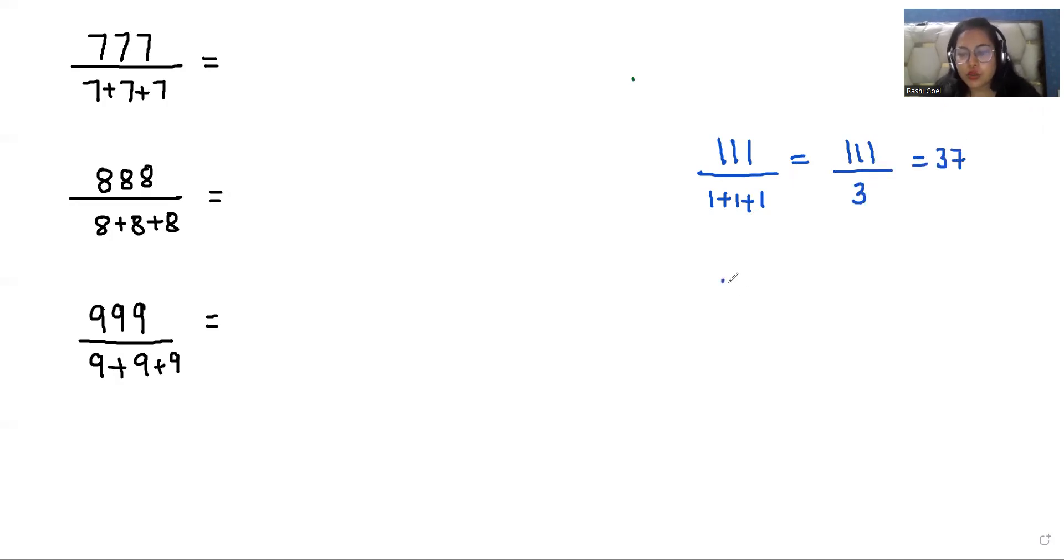Now, in case 2, if 222, we need to divide it by 2 plus 2 plus 2, that is 222 divided by 6. So we get again 37.